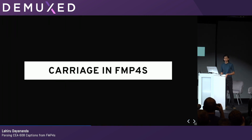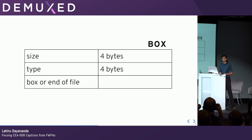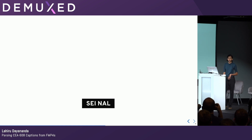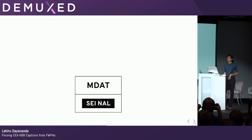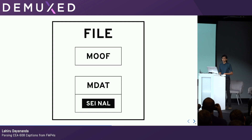But we still don't know where it goes in FMP4s. MP4s are built up of things called boxes, which have a size and type. Then you have a box or the end of the file, depending on what you're doing. In our case, we have our SEI NAL, and that goes into a box called the Media Data Box. This is a top-level box in the file, and you have another top-level box called the Movie Fragment Box that we'll come back to later.